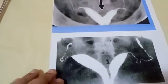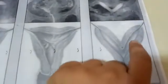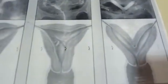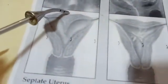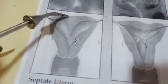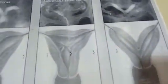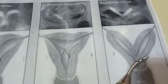Here is a picture of bicornuate uterus — there are two separate cavities. In septate uterus, the cavity is divided into two parts. To differentiate by laparoscopy, look from above: in bicornuate uterus the external outline is abnormal with two parts, while in septate uterus the external outline is normal.